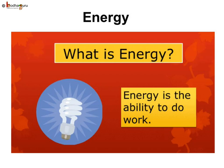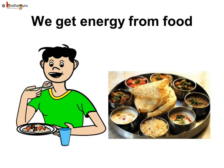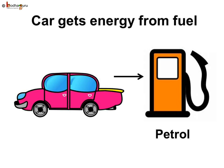Now let us learn about energy. Energy is the ability to do work. When you apply force on an object, your body uses energy. For example, to move a table you apply force, and to do so your body uses energy. Your body produces energy from the food you eat. A moving car uses energy from its petrol. So whenever force is applied, energy is used.